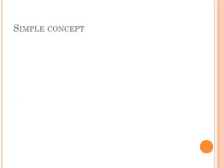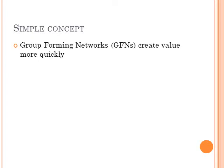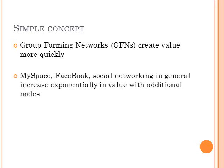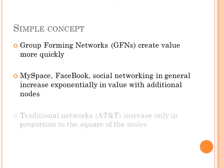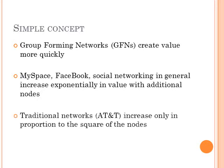Reed's Law is the notion that group-forming networks create value more quickly than regular networks. A network whose nodes themselves are networks, think MySpace, Facebook, or social networking in general, would increase in value more quickly than traditional networks that generally connect only to nodes directly, such as telecommunications systems like AT&T.